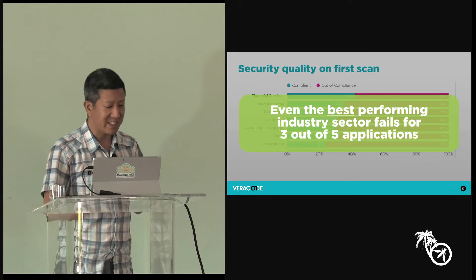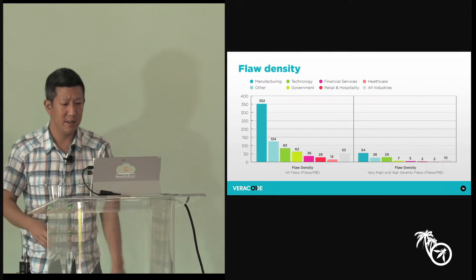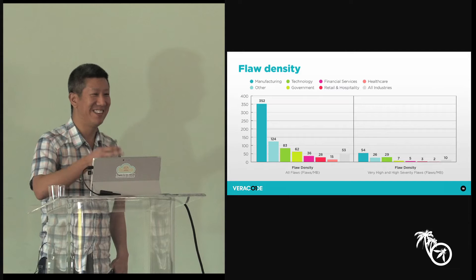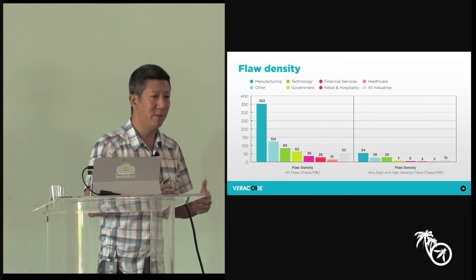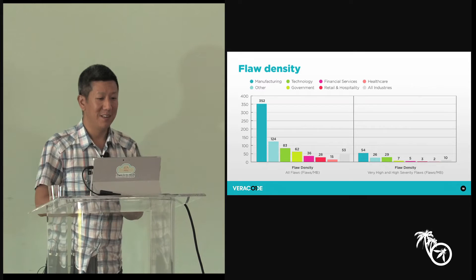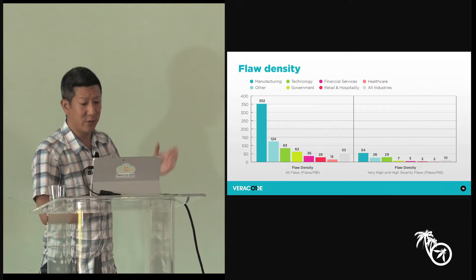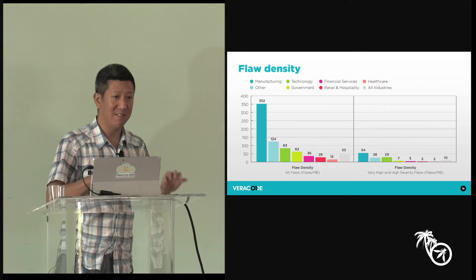Show of hands — who thinks flaw density, which is flaws per megabyte or flaws per thousand lines of code, is a valuable thing to measure? It actually is, but not in the way that a lot of people use it. Customers, analysts, and reporters will ask us to report on flaw density so they can say things like 'this language is awful' or 'this industry sector is terrible.' But that's a misleading metric. The reason is the programming language itself has a significant impact — some languages let you accomplish a lot in very little code, so your flaw density is going to be higher.